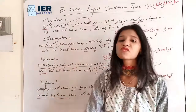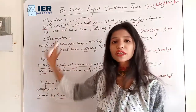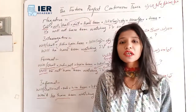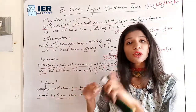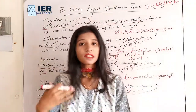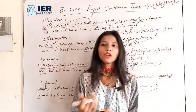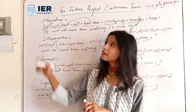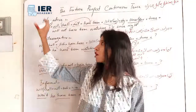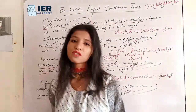So these are the different types of sentences for Future Perfect Continuous Tense — how we can form simple, negative, interrogative, formal, and informal sentences. Future Perfect Continuous Tense refers to an action that will be in progress up to a particular time in the future.